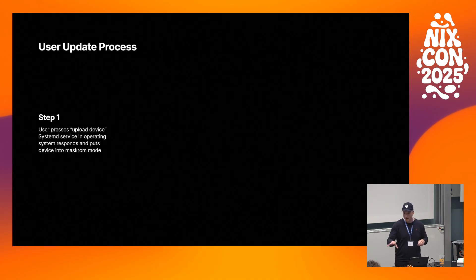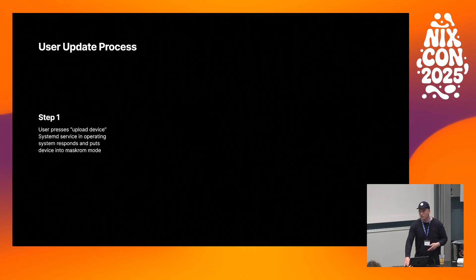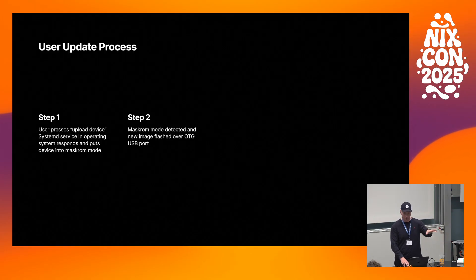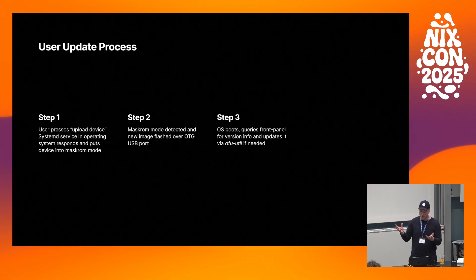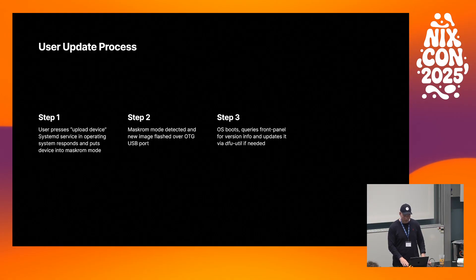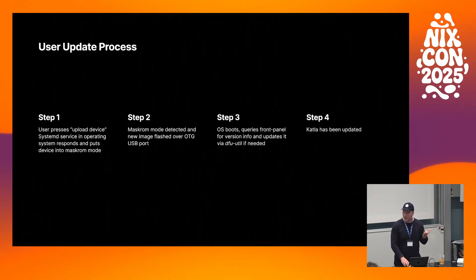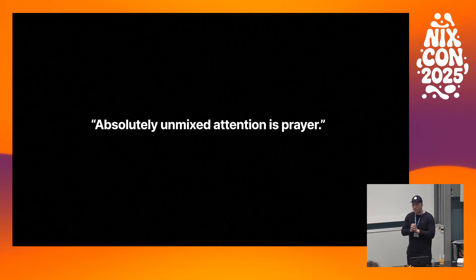For the user update process: it's very simple because there's no file system — all state is stored elsewhere. The user presses an upload button on a web page, which sends a command to our host putting the device into Maskrom mode. It boots back up, the code on the user's device acknowledges and flashes the new image over OTG. It then queries the front panel for versioning and updates it via DFU. The front panel has a USB DFU bootloader with A/B partitioning in case something fails.